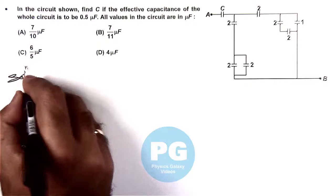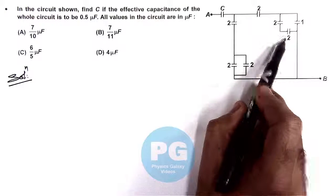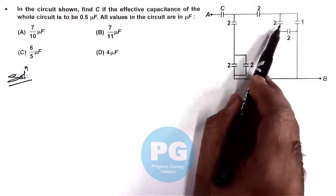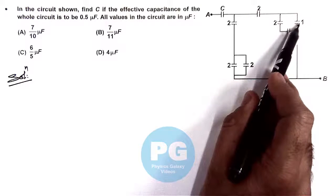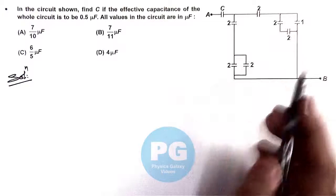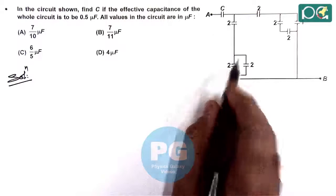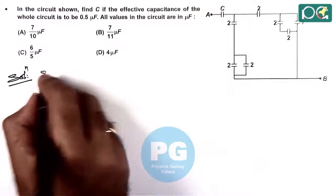In the solution, we can see two and two in series gives one microfarad. One and one in parallel gives two. Two and two in series gives one microfarad. Two and two in parallel gives four microfarad in series with two.